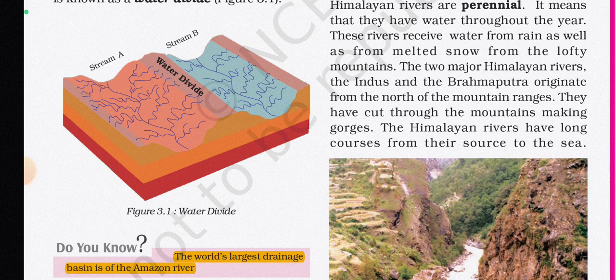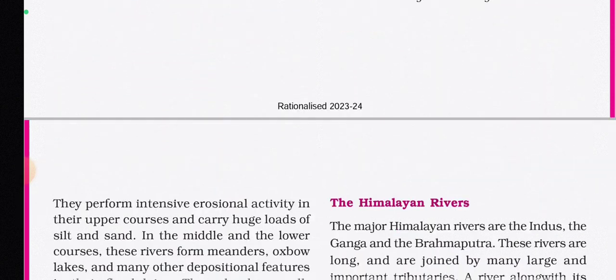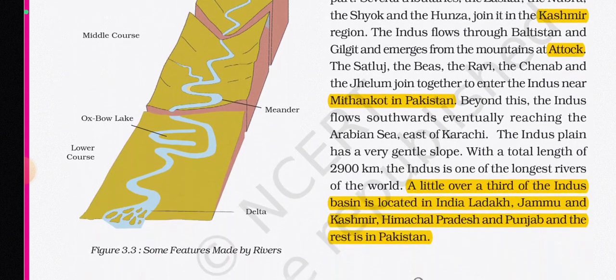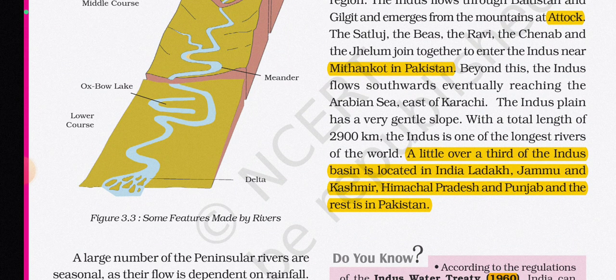The two major Himalayan rivers — the Indus and the Brahmaputra — originate from the north of the mountain ranges and have cut through the mountains making gorges. The Himalayan rivers have long courses from their source to the sea. They perform intensive erosional activity in their upper courses and carry huge loads of silt and sand in the middle and lower courses.